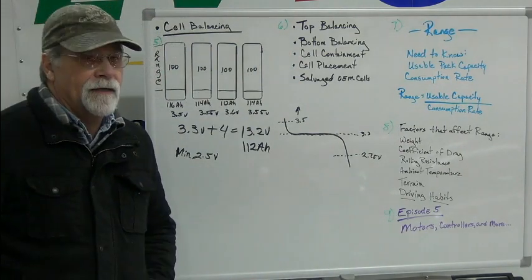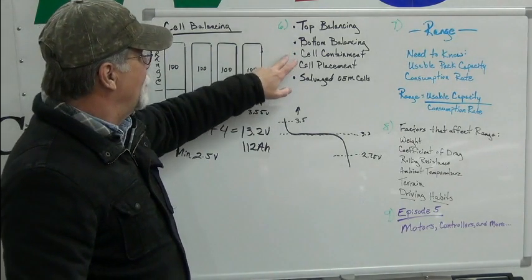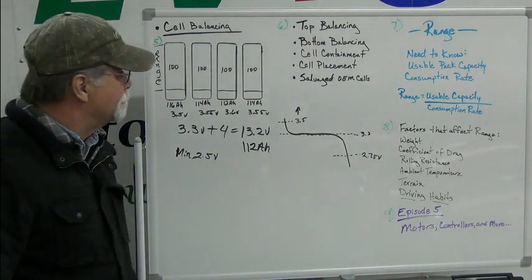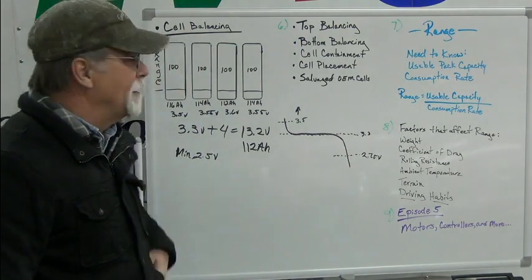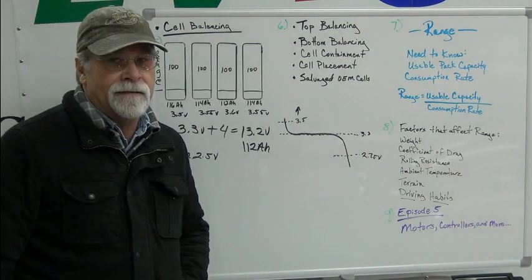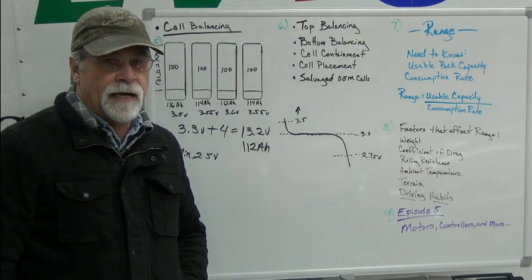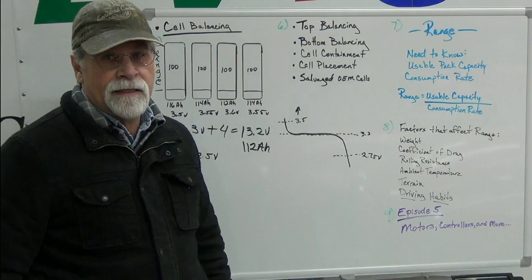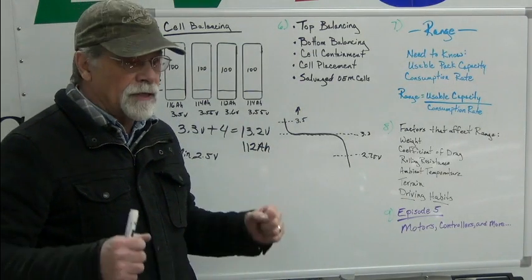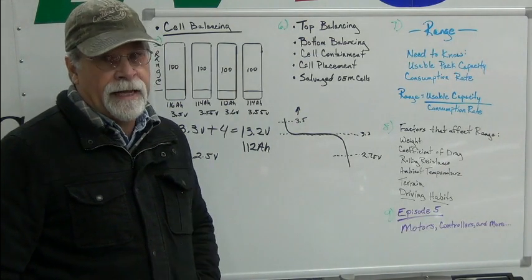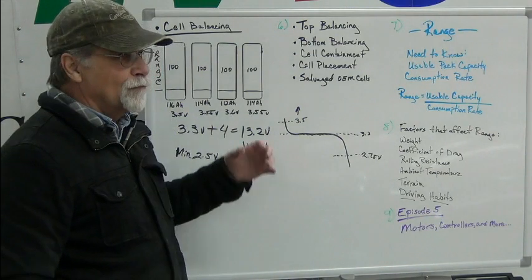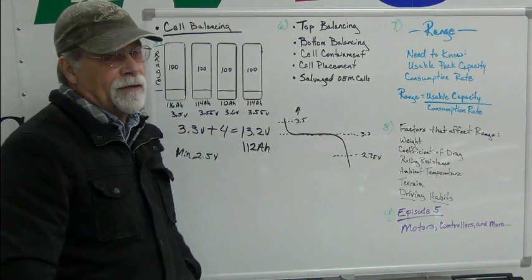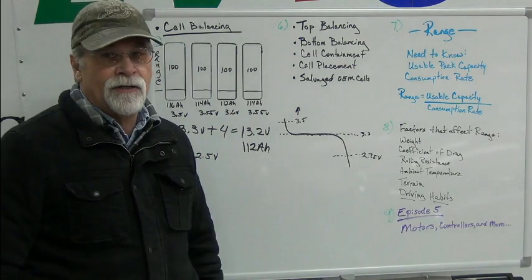Next, cell containment. This is where I see a lot of people making mistakes. You really need your cell containment to protect those cells in the case of an impact, a rollover, or an accident. Your battery containment needs to be robust enough to contain the cells and keep them from shorting out. What I see a lot is people don't consider the 'what if' — what if you're in an accident, what if you're T-boned, what if you're rear-ended? What are those cells going to do in an accident?